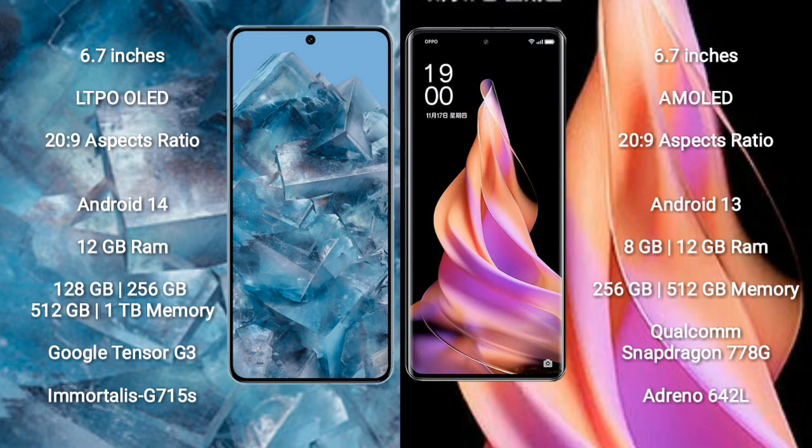Google Pixel 8 Pro comes with 12GB RAM, and 128GB, 256GB, or 1TB internal storage, powered by the Google Tensor G3 processor with Immortalis-G715 GPU. OPPO Reno 9 comes with 8GB or 12GB RAM and 256GB internal storage, powered by the Qualcomm Snapdragon 778G processor.